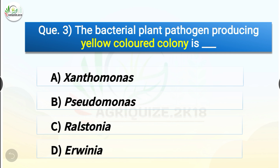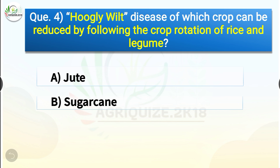Doy et al. named them mycoplasma-like organisms or MLOs. Question number three: The bacterial plant pathogen producing yellow-colored colony is dash. The options are Xanthomonas, Pseudomonas, Ralstonia, or Erwinia. The correct answer is option A, Xanthomonas. Xanthomonas is a gram-negative aerobic short rod-shaped bacterium belonging to the family Pseudomonadaceae. It produces a characteristic yellow pigment used as a chemo-taxonomic and diagnostic marker.